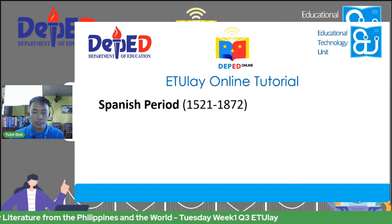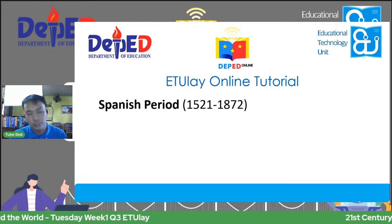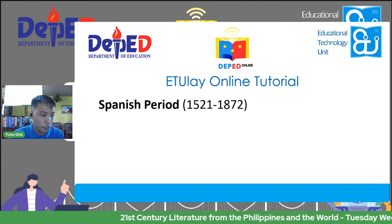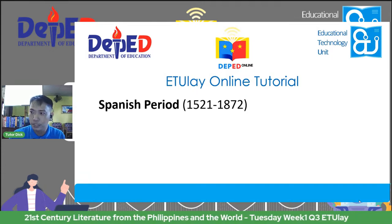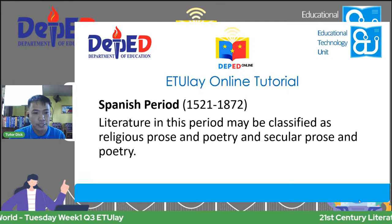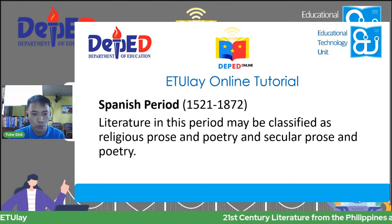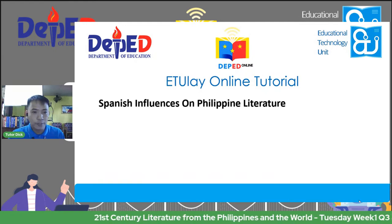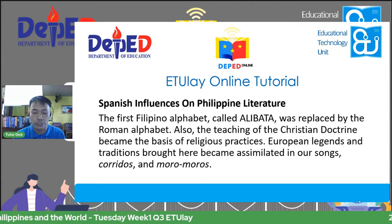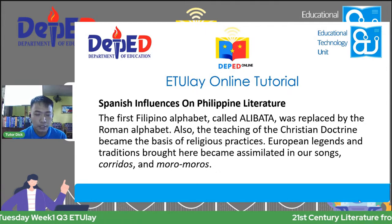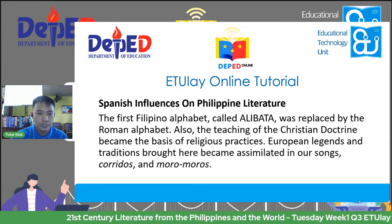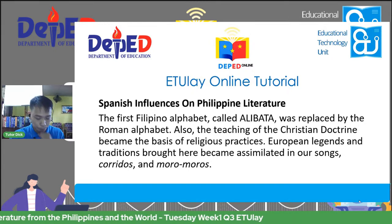After the pre-Spanish period, we have the arrival of the Spaniards — the Spanish period, from 1521 to 1872. Literature this period may be classified as religious prose and poetry and secular prose and poetry. Spanish influences on Philippine literature during this period include: the Philippine alphabet from Alibata, our original alphabet, was replaced by the Roman alphabet. Also, the teaching of the Christian doctrine became the basis of religious practices. European legends and traditions brought here became assimilated in our songs in the form of corrido.